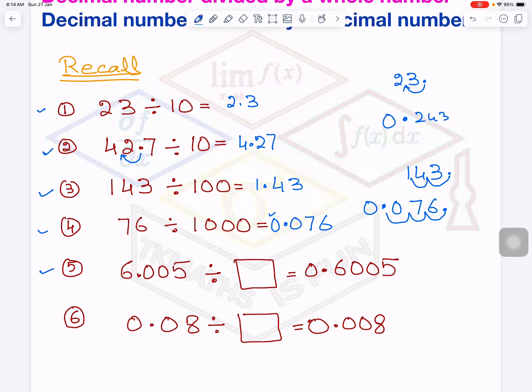Let's see number 5. It is 6.005. But where decimal was? After 6. And where it has come here? Before 6. So what happened? If it has moved from here to here, it means it jumped one place to the left. So you will divide it by 10. Absolutely right.